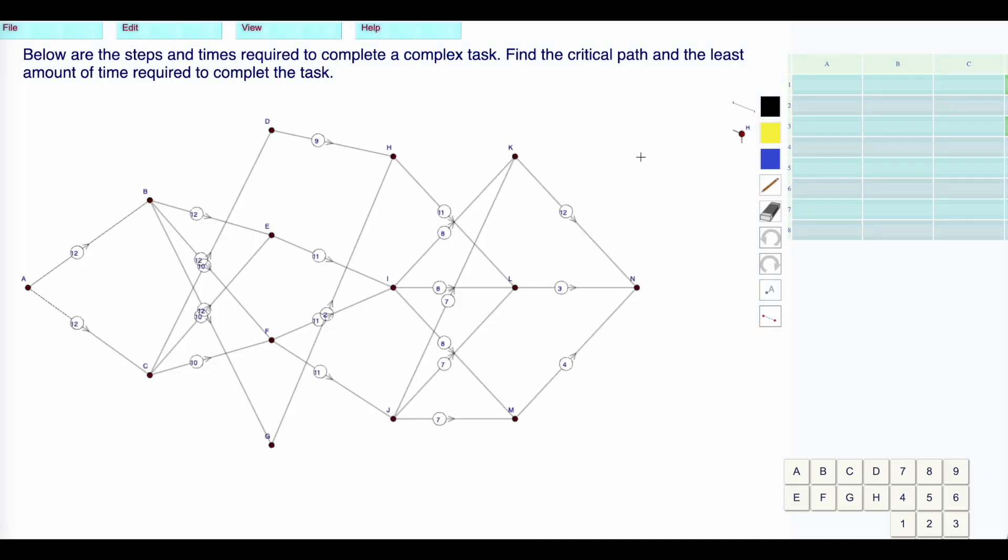Level 21, critical paths. Here is a level 21 type question. We can move these little nodes around. Sometimes the writing might be hard to read, like the numbers might be on top of each other. You can move these nodes around. You can give yourself a bit more room to work if necessary.